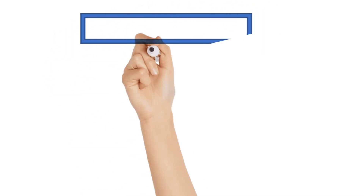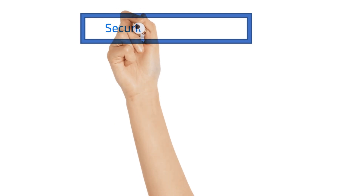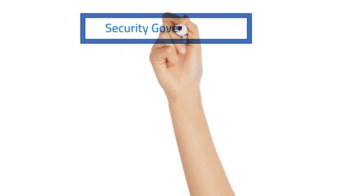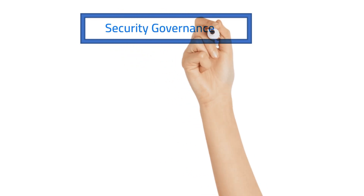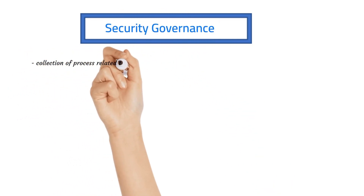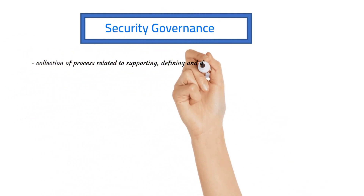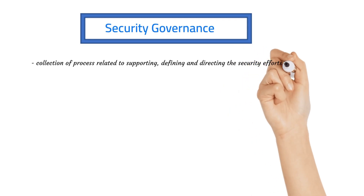Hi all, today we are going to see what security governance is. Security governance is the process by which an organization or a system manages and controls its security posture.